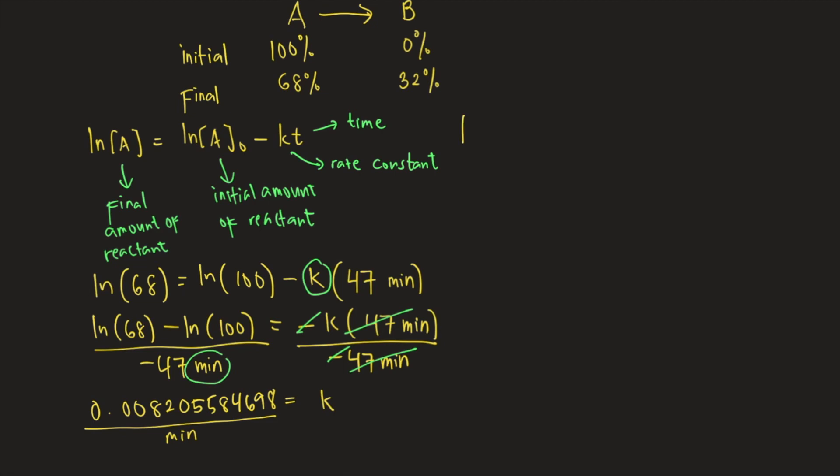Now we know the relationship of K and half-life for first-order reactions. For first-order reaction, half-life, the symbol for half-life is t1/2, is equal to ln of 2 divided by K. So ln of 2 divided by 0.008205584698 per minute.